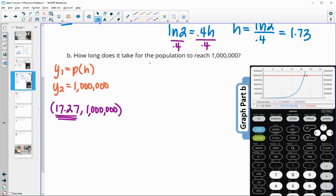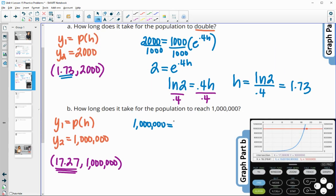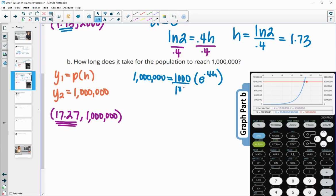You can also plug the million in and find out when this function is going to equal that. And the function was 1,000 times E to the 0.4H. So we would divide by the 1,000. So this would be 1,000 E to the 0.4H. So then you would have the LN because the base is E. So natural log of 1,000 is going to give us back that exponent of 0.4H and then divide by that 0.4.